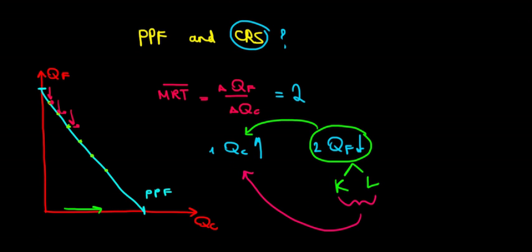But over here, over here in constant returns to scale, the relationship is going to be the same along the curve. So one extra unit of clothing means two less units of food. Two less units of food are the inputs that we need to plot in our production function to get the extra unit of clothing.